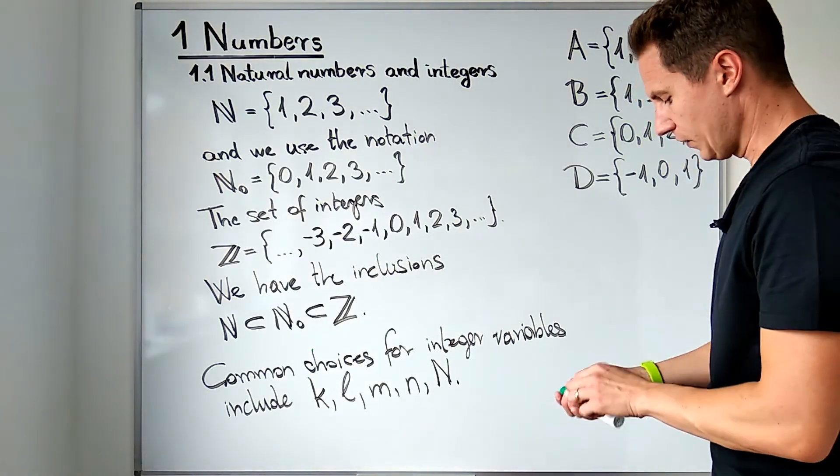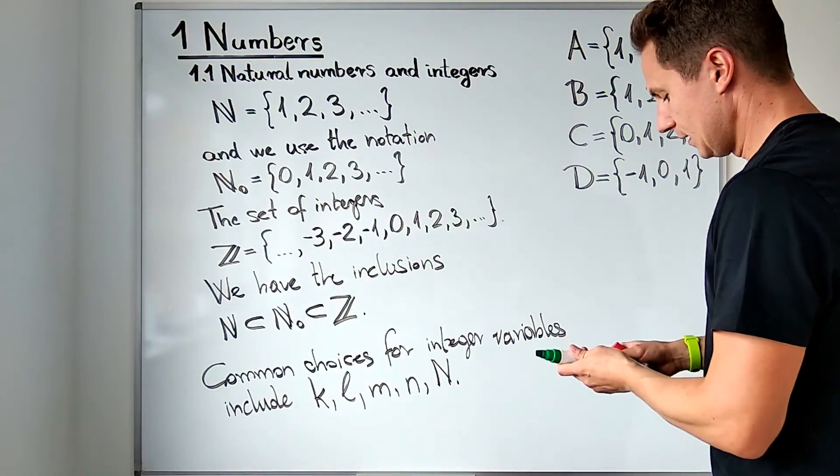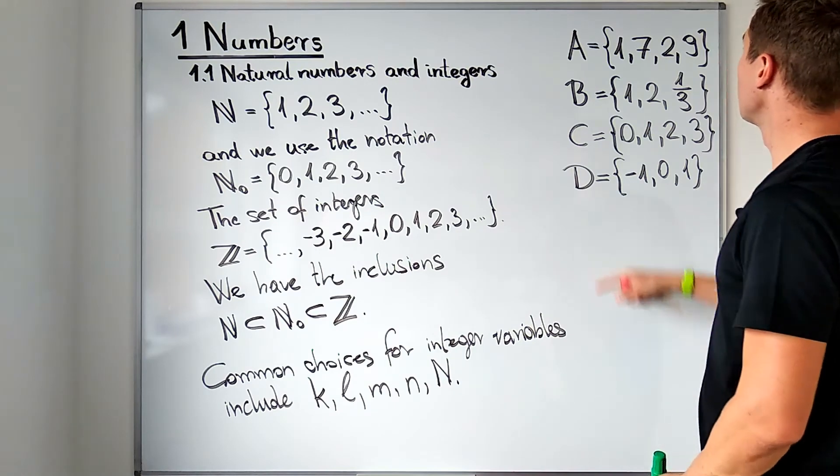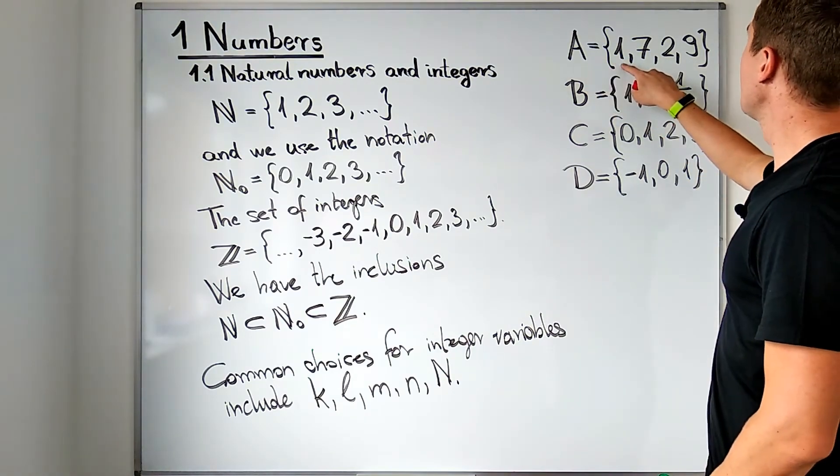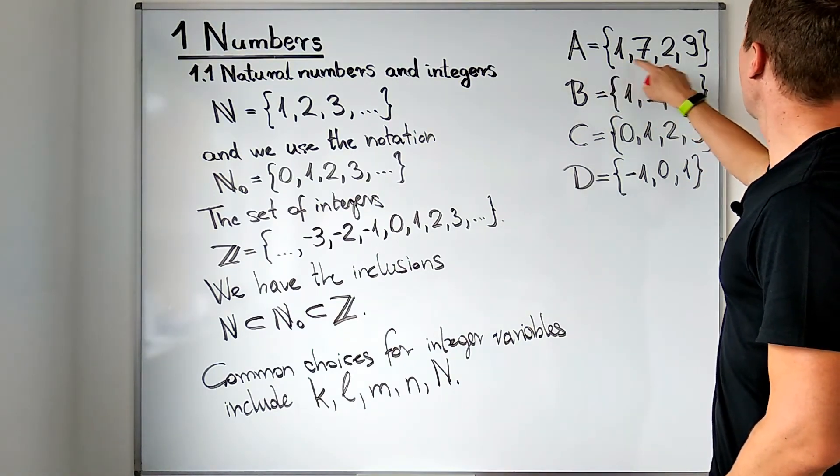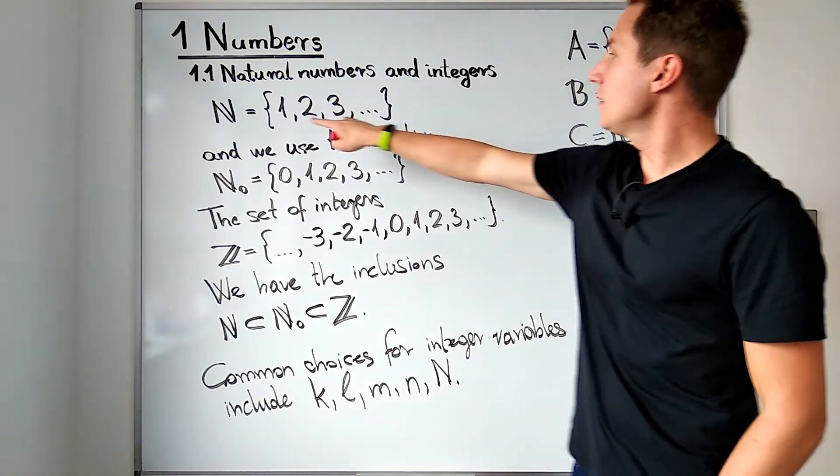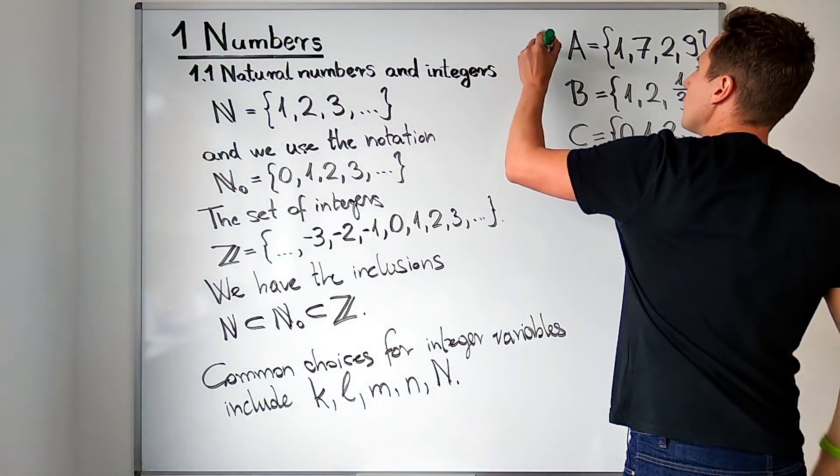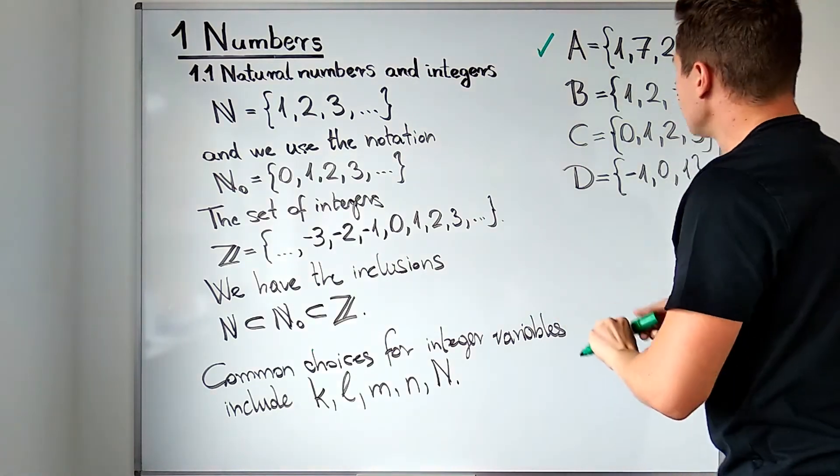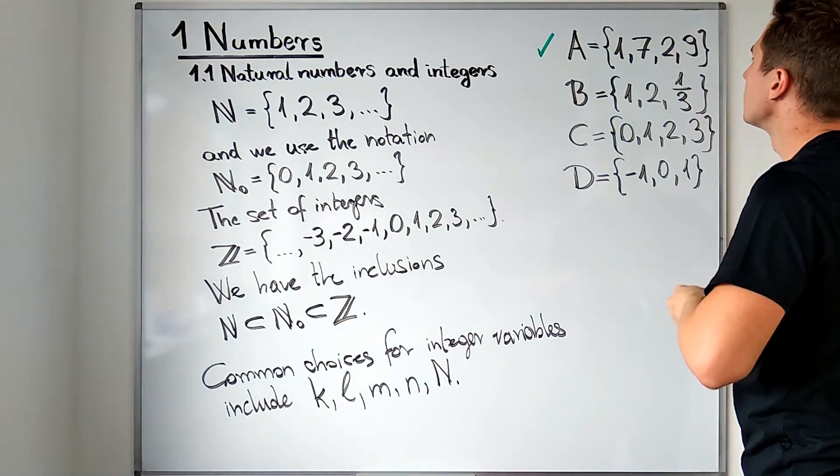Okay, so I hope you have selected the set with only natural numbers. Let's go through them. So the first set, set A, has its elements 1, 7, 2 and 9 and they are all natural numbers. So this is definitely a good choice. This is a set with only natural numbers in it.